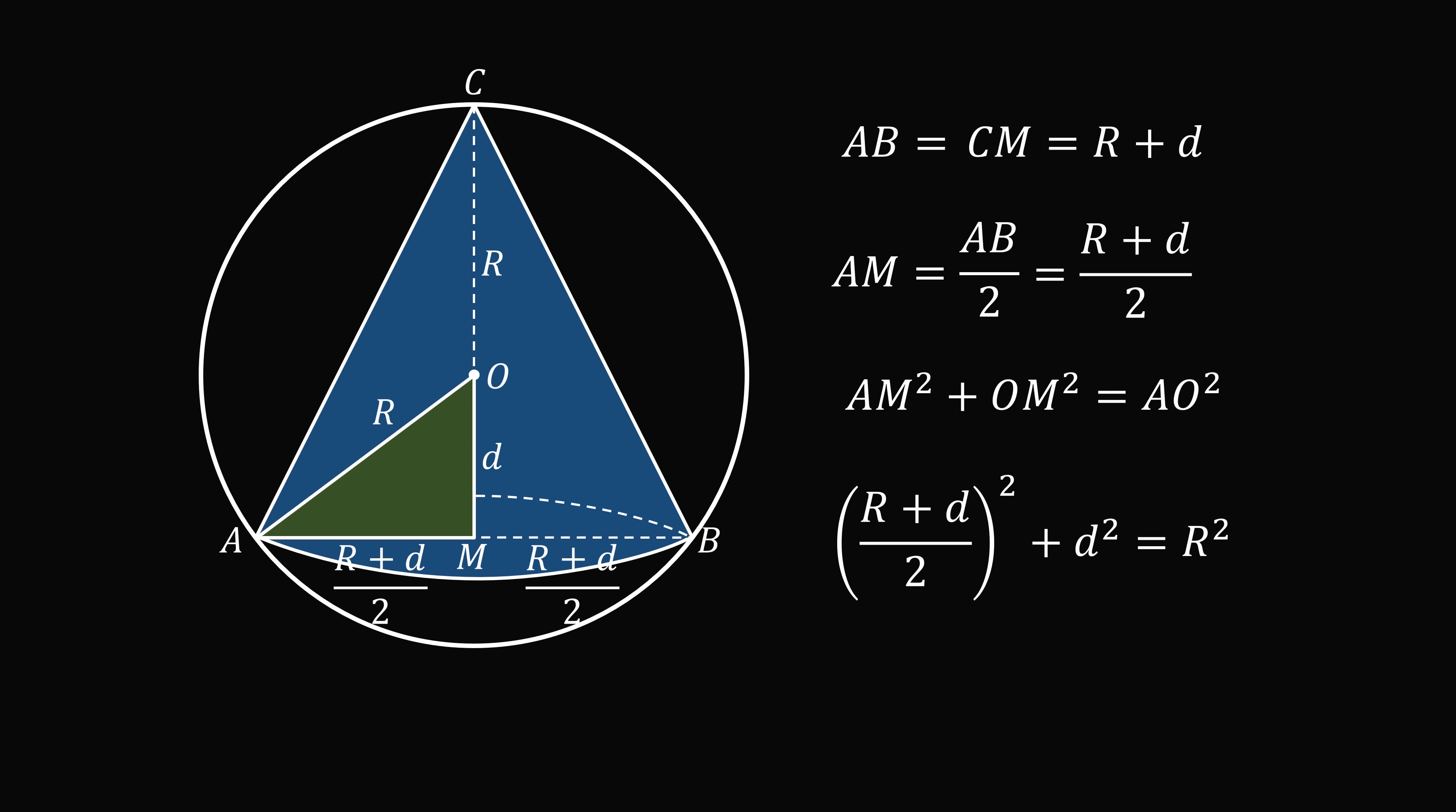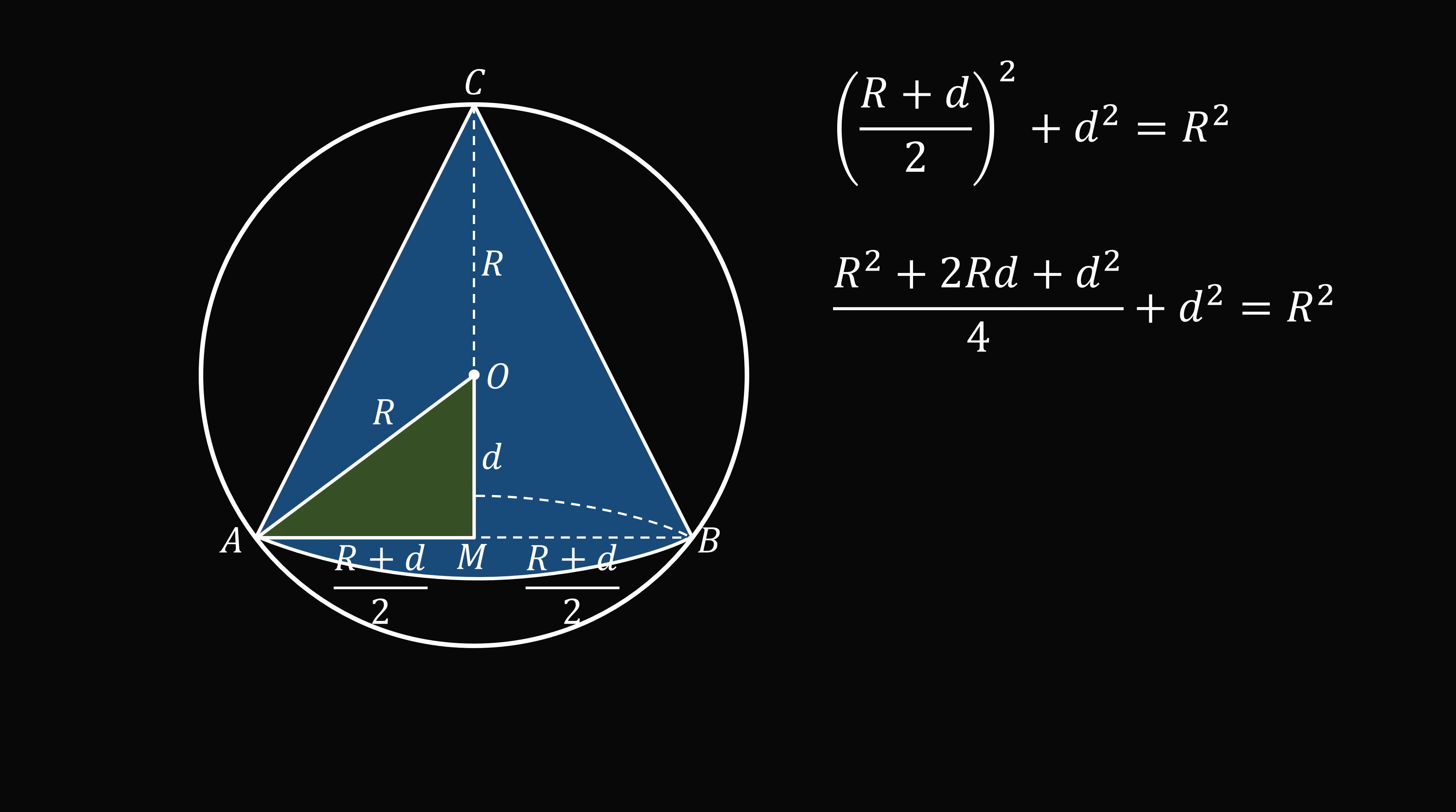So we substitute in for AM, OM, and AO. Let's now focus on just this equation. We will square the binomial, then we will multiply both sides by 4. We can then group like terms. So we end up with 5d squared plus 2Rd minus 3R squared is equal to 0.